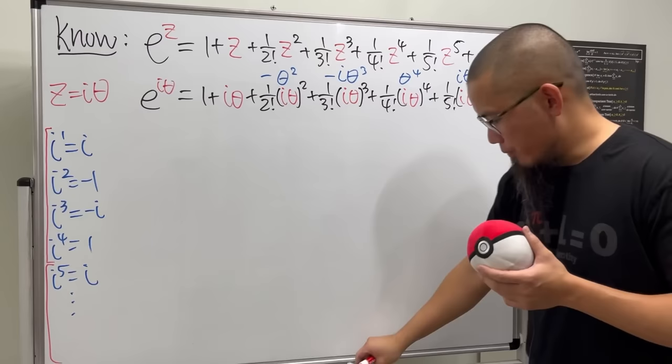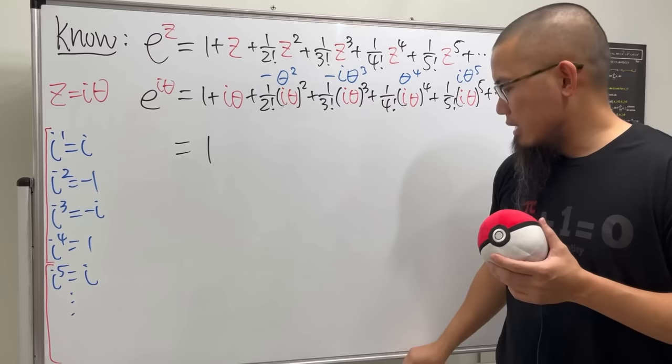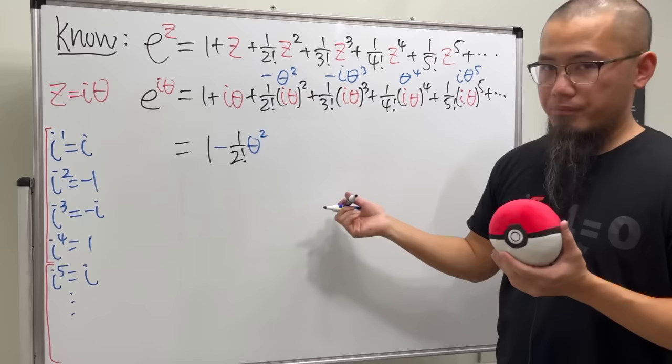All right. Cool. Now, I am going to put down all the terms that they don't have i first. So we see this does not have i. So let's write that down. And then next, we have this term that they don't have i. So let's put down negative. And then we have 1 over 2 factorial. And then we have theta squared.